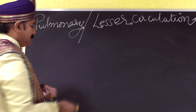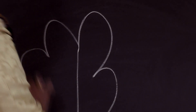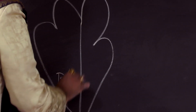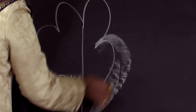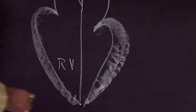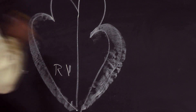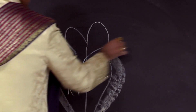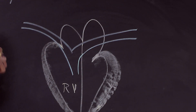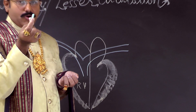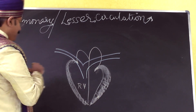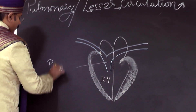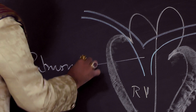Lesser circulation is also called the pulmonary circulation. This is the schematic diagram of the heart. Here you have the right ventricle, and from the right ventricle you have the pulmonary trunk, which divides into right and left pulmonary arteries. I am drawing the pulmonary trunk with blue color because it is carrying deoxygenated blood.